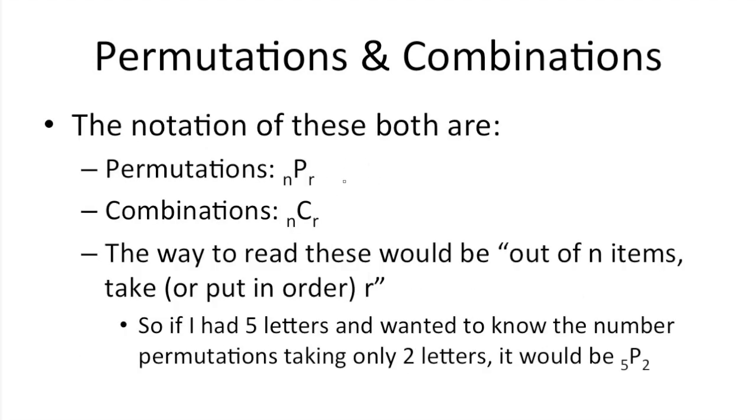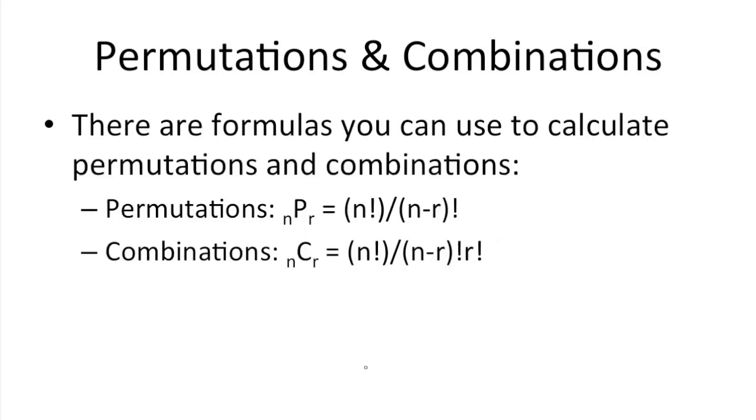So the shorthand notation for these are NPR and NCR. So you would read these as out of N items, I'd want R permutations. Or out of N, I would take R combinations. So if I had 5 letters and wanted to know the number of permutations taking only 2 letters, it would be 5P2. So there's some formulas you can use to calculate permutations and combinations. These are things you're going to have to memorize. For permutations, using the NPR notation, you'd have N factorial over N minus R factorial. Difference for combinations, NCR, would be N factorial over N minus R factorial times R factorial. This is all in the denominator, by the way.